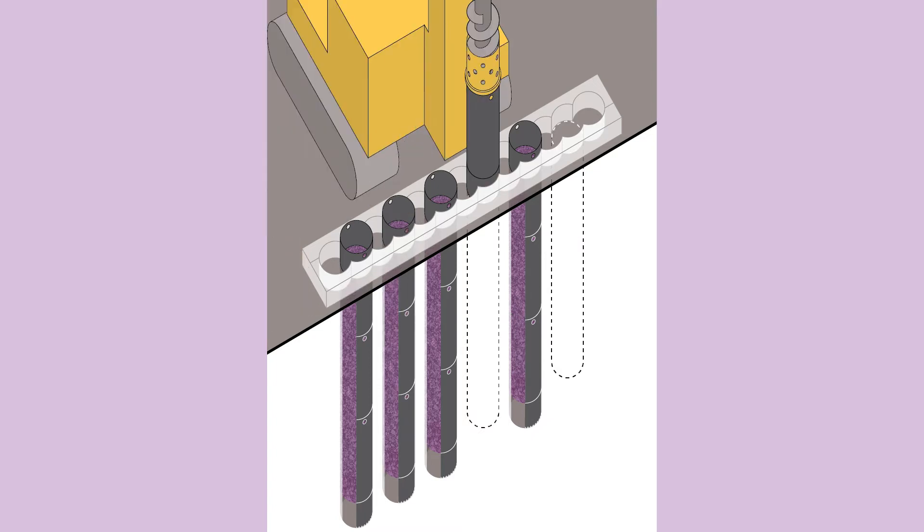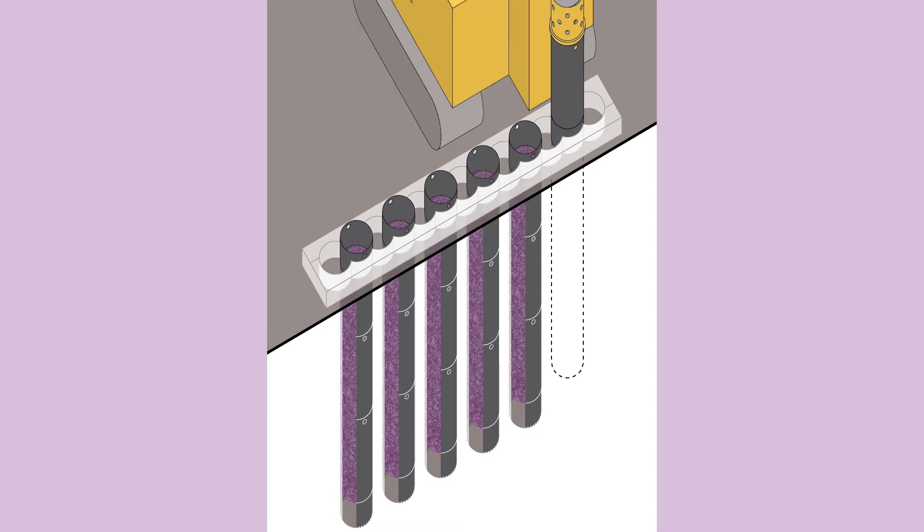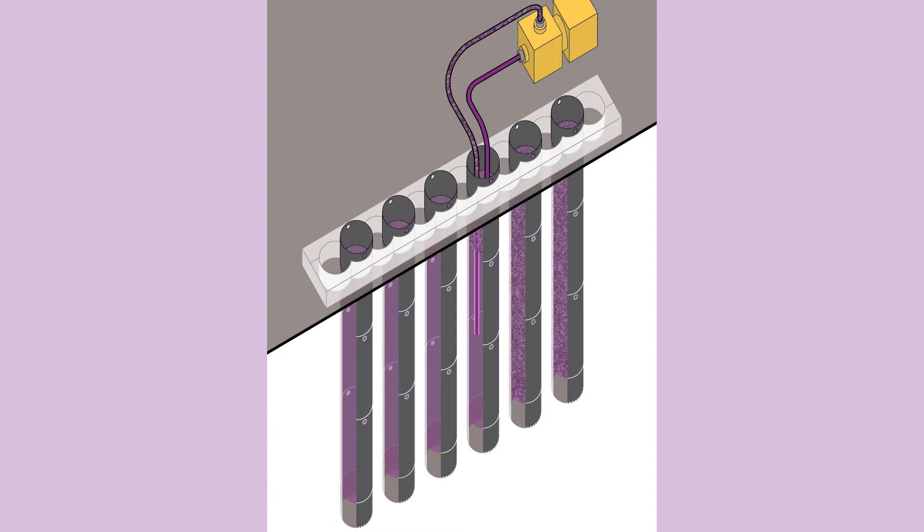Slurry is poured into the pile while drilling in order to keep the soil pressure balanced. After all the primary piles have been drilled and are filled with slurry, the slurry is filtered and desanded so the concrete can be properly poured into the steel casings.